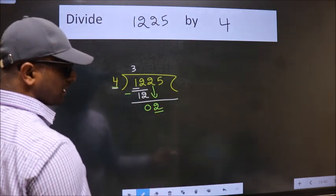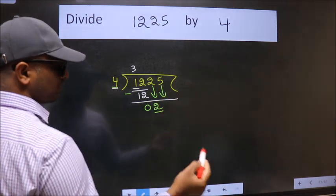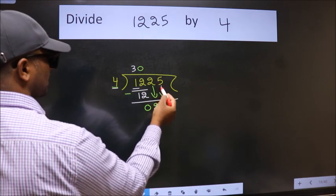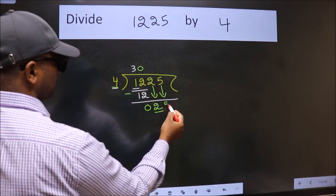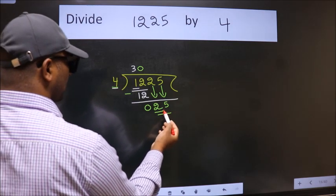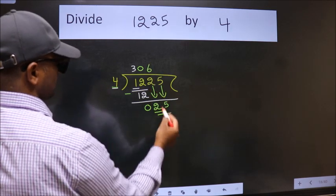So we should bring down the second number. And the rule to bring down the second number is put 0 here. Then only we can bring this number down. So, 25. A number close to 25 in the 4 table is 4 times 6 equals 24.